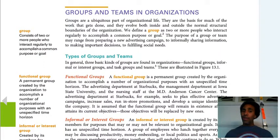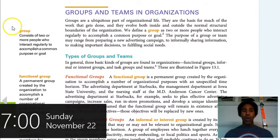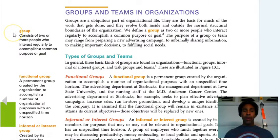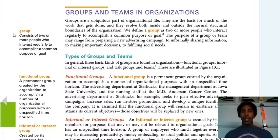It's only 15 chapters in this book. A group consists of two or more people who interact regularly to accomplish a common purpose or goal. You can hear the commercial 'army of one' — you can be an army of one, but you can't be a group of one. It has to be two or more people.